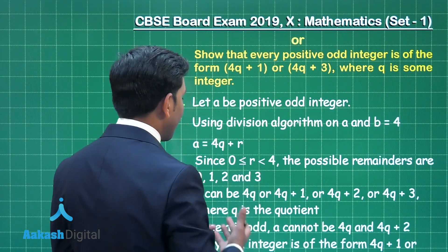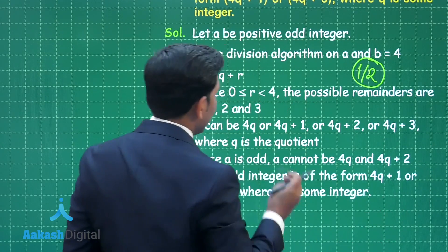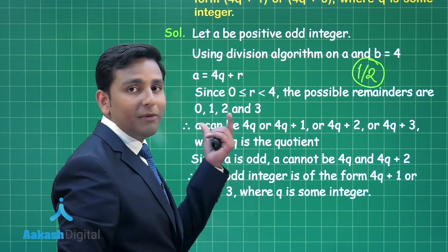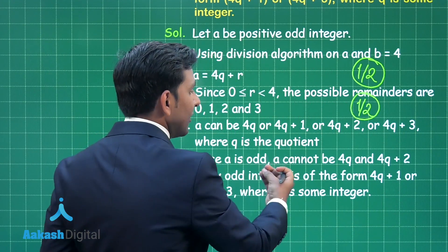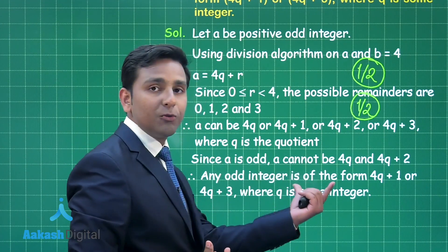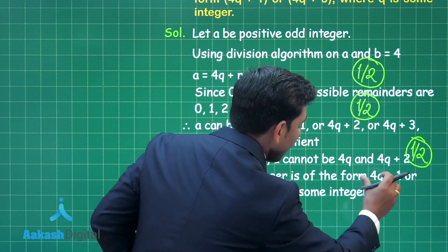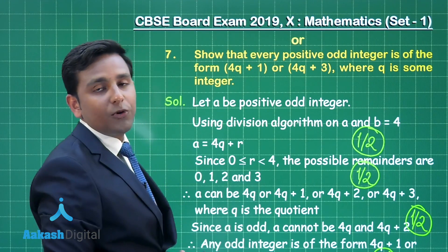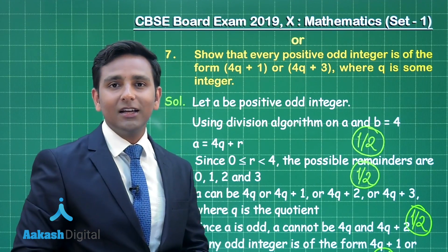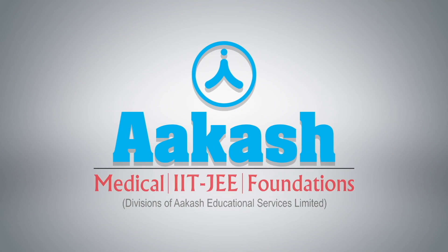Applying Euclid's division lemma earns half a mark; finding all possible values of R earns another half mark; rejecting 4Q and 4Q plus 2 earns another half mark; and the final conclusion earns the last half mark, giving 2 out of 2 for this question. I hope you understood the solution.